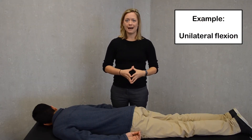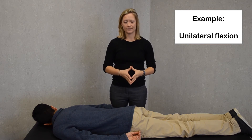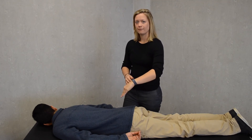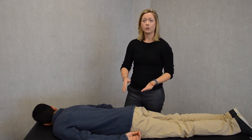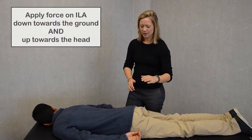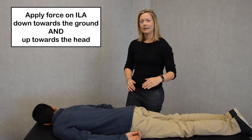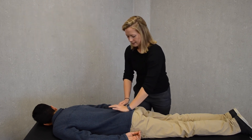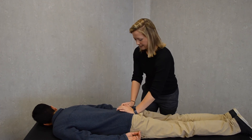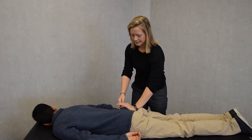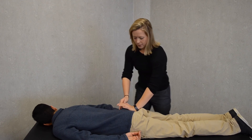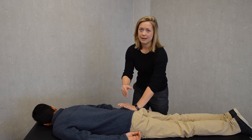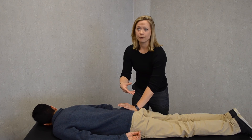Next we'll treat a right unilateral sacral flexion dysfunction. Think of the sacrum: here is extension, here is flexion. For treating unilateral flexion, we're going to apply pressure on the ILA in a force up and toward the head. This is a right-sided unilateral flexion, so I'll apply force on inhalation — remember, extension goes with exhalation, and flexion goes with inhalation.